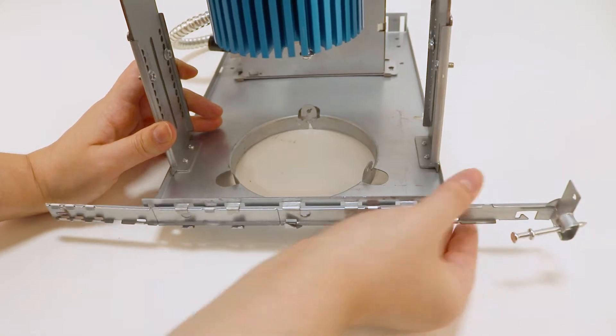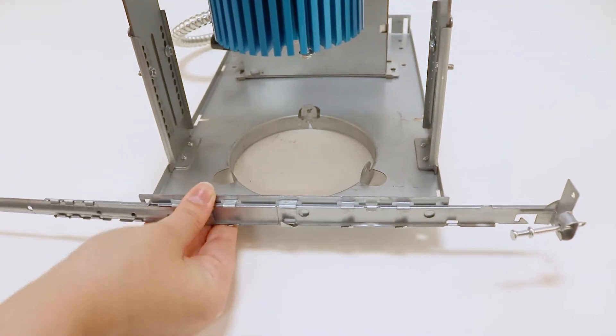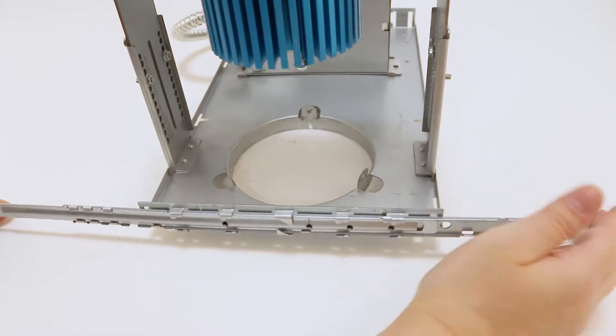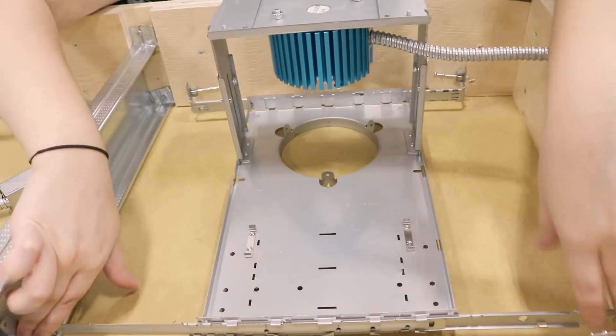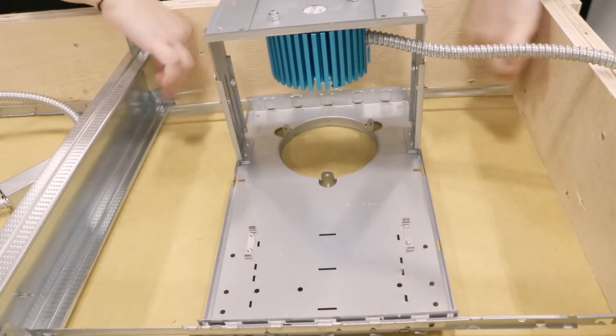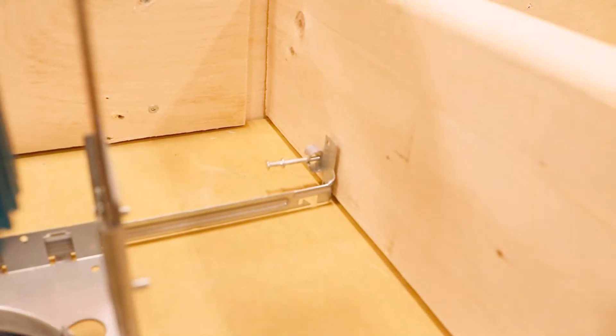Insert hanger bars into slots of the mounting plate. Extend the hanger bar and level to the lower edge of the joists. Hammer the pre-installed nails into the joists.